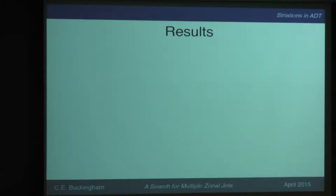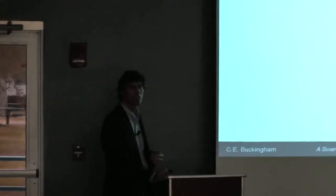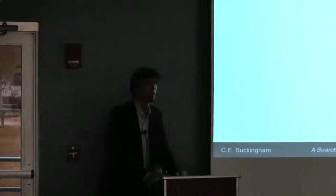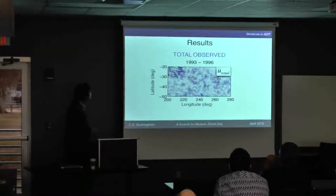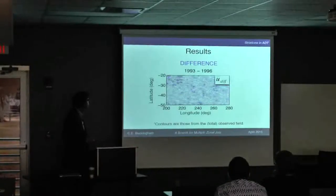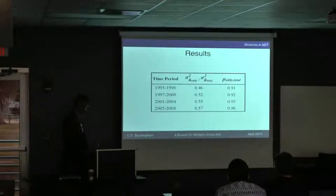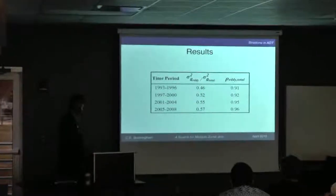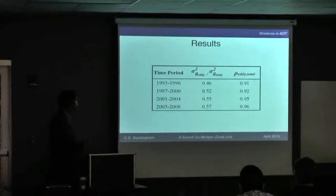The question becomes: are they really orthogonal? Are eddies and jets something you can just superpose, or do they actually interact dynamically? There is a correlation between the stripes and the jet — the correlation coefficient is quite high, about 0.4 to 0.5 — which suggests that there's some information there.